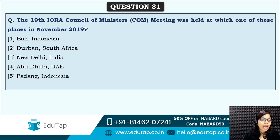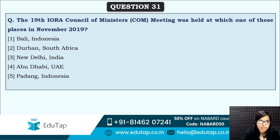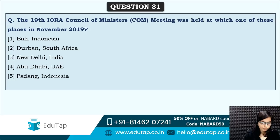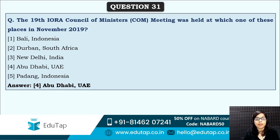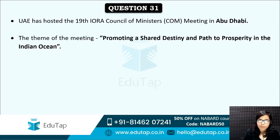Next: the 19th IORA Council of Ministers meeting was held at which place? Venue is again asked here — where was this particular meeting held? The correct answer is option four — Abu Dhabi. This particular Ministers meeting was held at Abu Dhabi. The theme of the meeting was: Promoting a Shared Destiny and Path to Prosperity in the Indian Ocean.